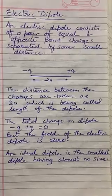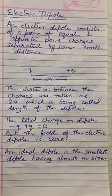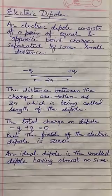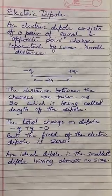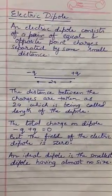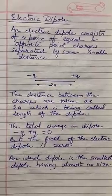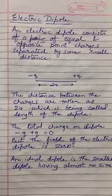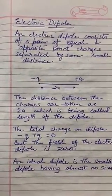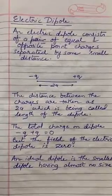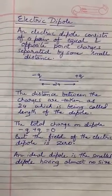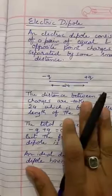Now, what do we call an ideal dipole? An ideal dipole is such a dipole which has almost no size. That means the value of 2a is almost negligible. An ideal dipole is the smallest dipole having almost no size.